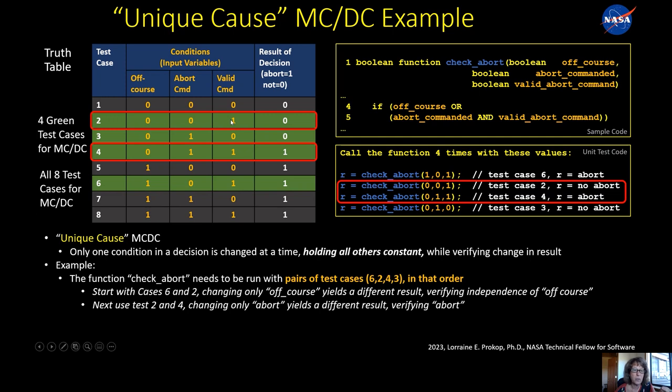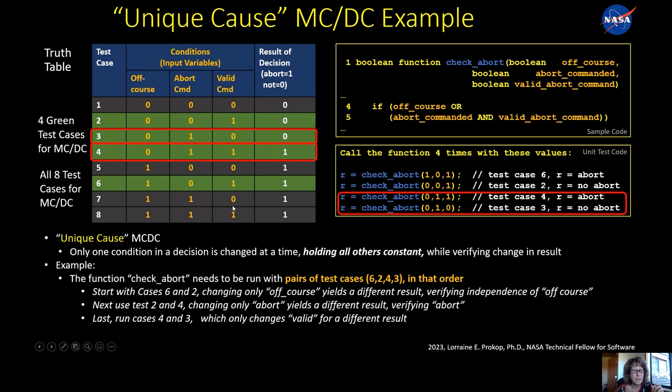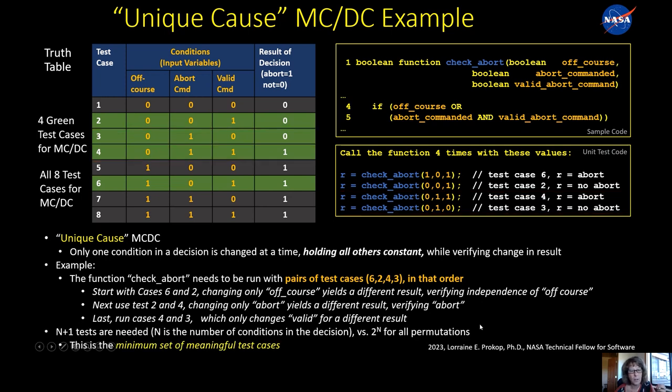Similarly, then the next two you take, you had two, now you add four. And in that case, everything changes except abort_command from a zero to a one, and the result changes from a zero to a one. So that pair of tests makes sure abort_command is tested. Lastly, you take four and three. And in that case, only the last one valid_command changes. These two are held constant and the result changes. So these four tests, it's n plus one, n being the number of conditions, you need n plus one tests to do the unique cause form of MCDC. And what it represents is the minimum meaningful set of test cases to do this form.